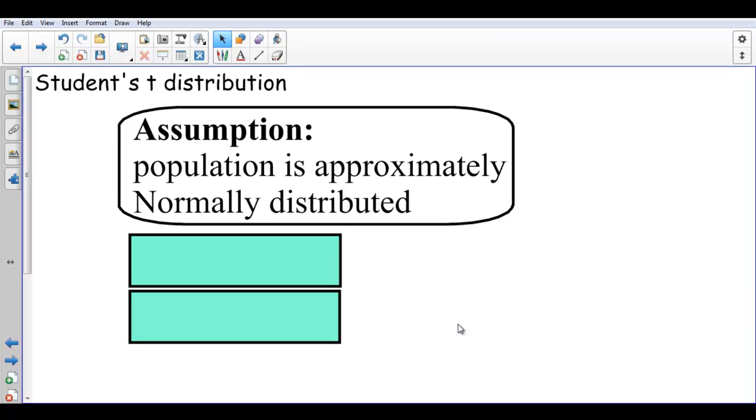One of the biggest assumptions is that you have to assume the population is approximately normally distributed, or maybe it's exactly normally distributed. So that's our main assumption if you're asked about assumptions.